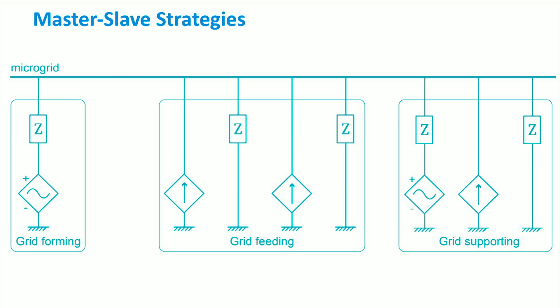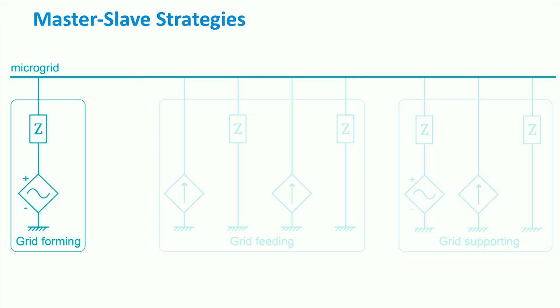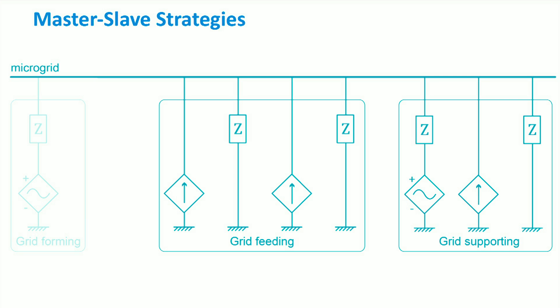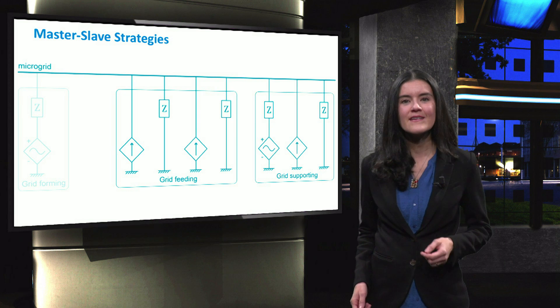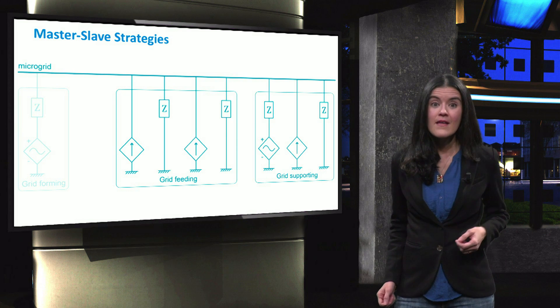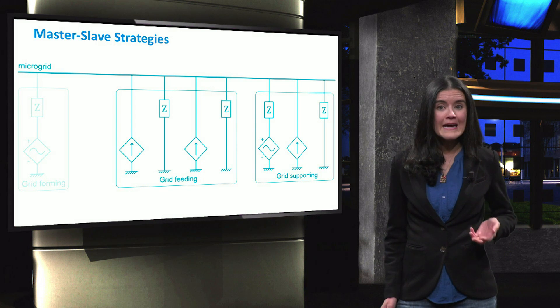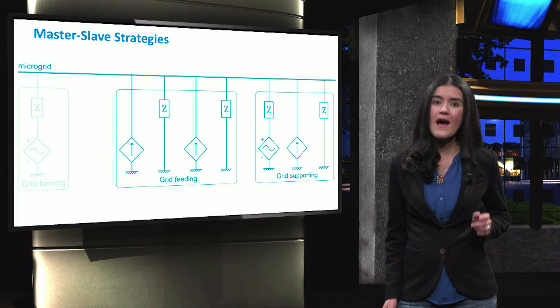The master-slave control strategy is a mature solution for the parallel operation of several distributed generations in microgrids. The master unit is represented by a grid-forming type, which dominantly controls the voltage and frequency of a microgrid. Grid feeding units, called slaves, mainly follow the voltage and frequency imposed by the master unit, while trying to follow their active and reactive power setpoints. Moreover, both types of grid-supporting units can be connected to such microgrid in a flexible way. In any case, a supervisory control is needed to appropriately divide the power among all the units. The main advantages of the master-slave control strategy are its simplicity, being quite straightforward to implement, and its robustness.